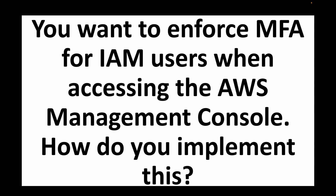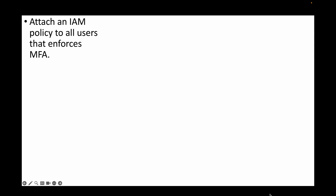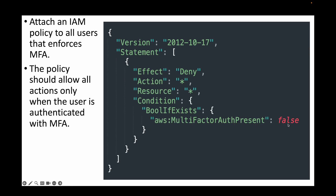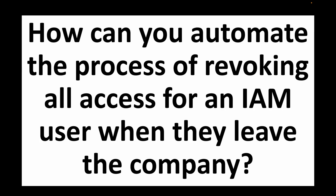The next question is: you want to enforce MFA for IAM users when accessing the AWS Management Console — how do you implement this? For this, we create an IAM policy that denies all actions on all resources if MFA authentication is not present. This ensures that if MFA is not enabled, users cannot perform any actions, enforcing that all users must enable MFA for their account before they can perform actions on the AWS account.